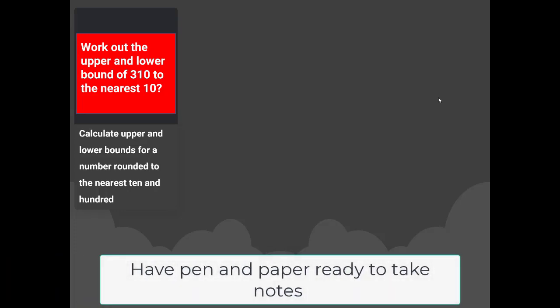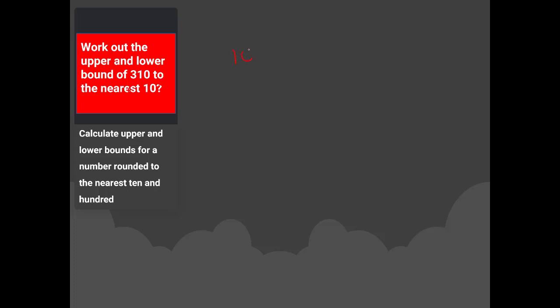Let's go on with the first example: work out the upper and lower bounds of 310 to the nearest ten. We need to know the range of answers we could possibly have. Because we are rounding to the nearest ten, we divide ten by two, which gives us five. To find the upper bound, add five to 310, giving 315. To find the lower bound, take away five from 310, giving 305.